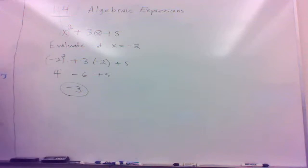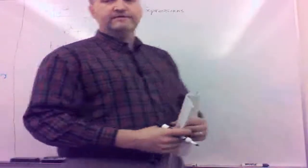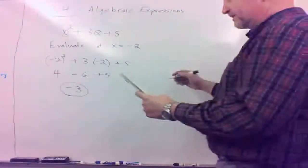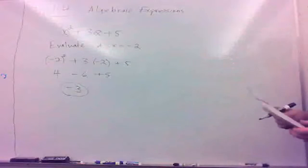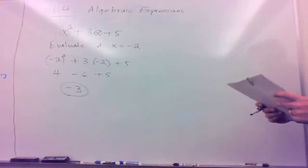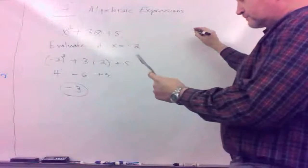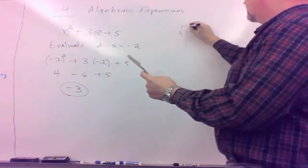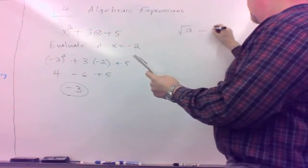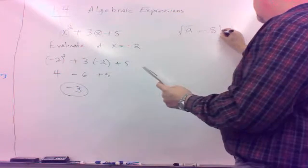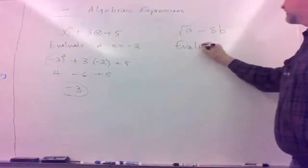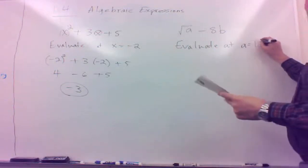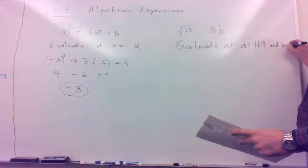Now, in this case we had a squared term and an x multiplied by a number. We could throw in some square roots and things like that, which you might also see. Let's say we had the expression — the square root of a minus 8b — and we're going to evaluate that at a equals 169 and b equals 3 fourths.